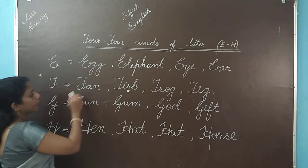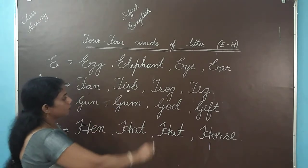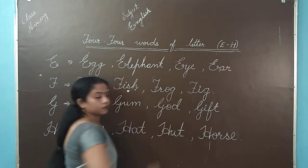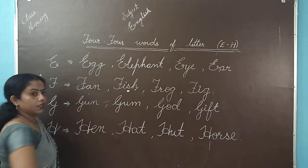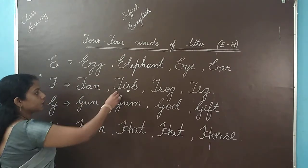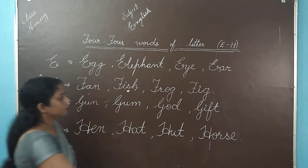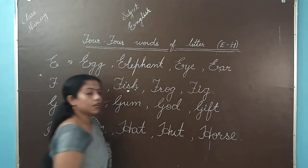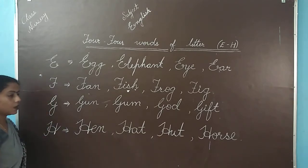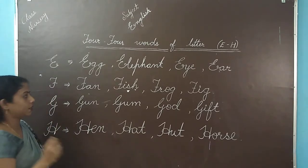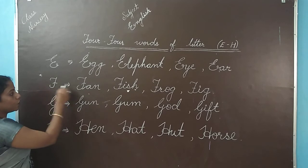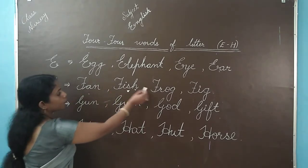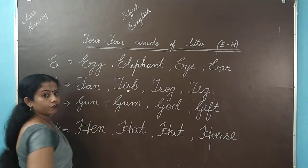The next letter is F. F for fan, fish, frog, fig. Fan yani pankha, fish yani machli, frog yani mendak, fig yani anjeer. Anjeer kya hai? Dry food hai. F for fan, F for fish, F for frog, F for fig.